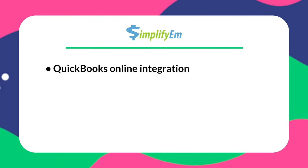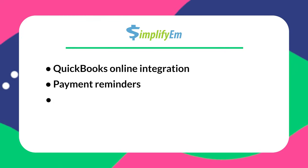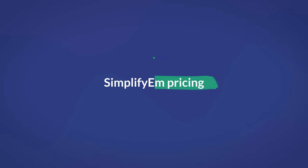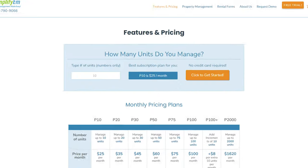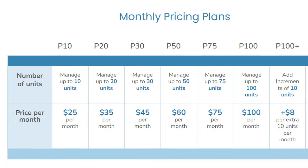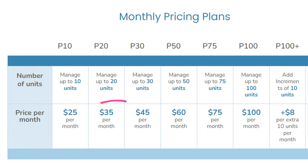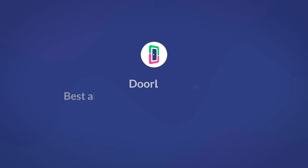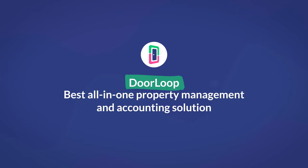Some of SimplifyEm's key features are QuickBooks Online integration, payment reminders, online rent payments, and bill pay. SimplifyEm offers a free trial. Their basic P10 plan comes in at $20/month for up to 10 units, P20 plan at $35/month for up to 20 units, and you'll need to pay for their P50 plan at $60/month to get the most out of their e-leasing features.